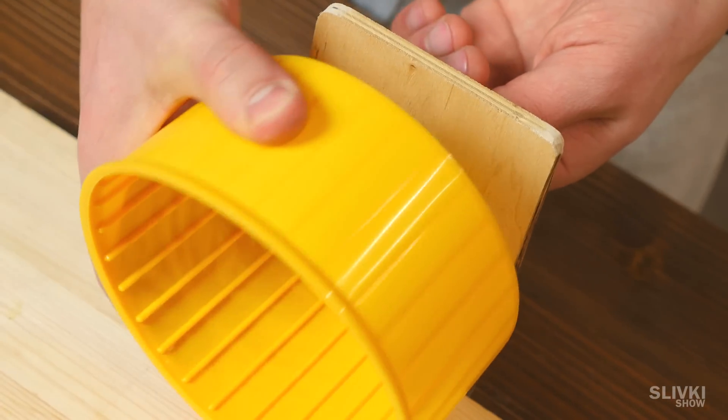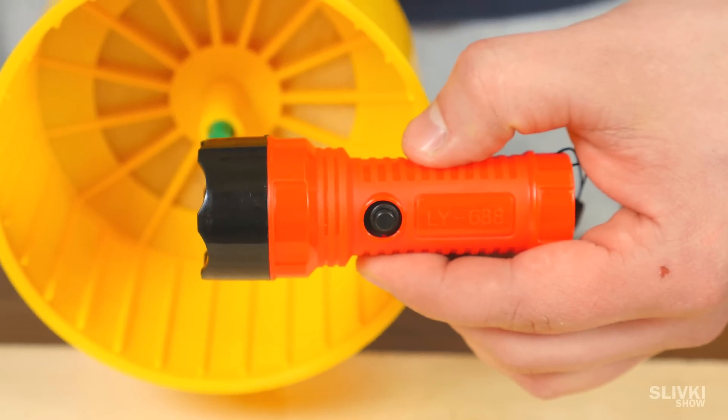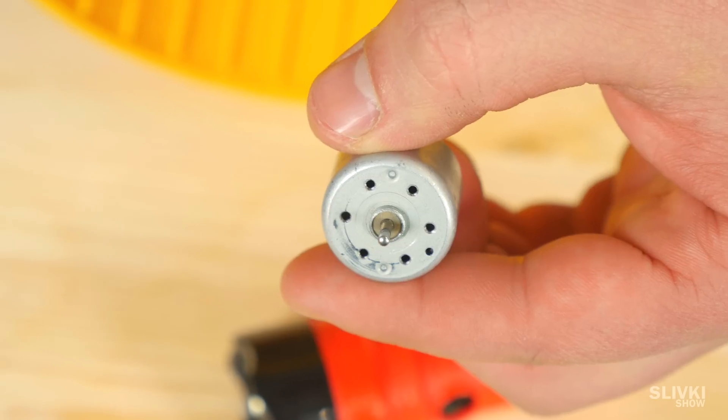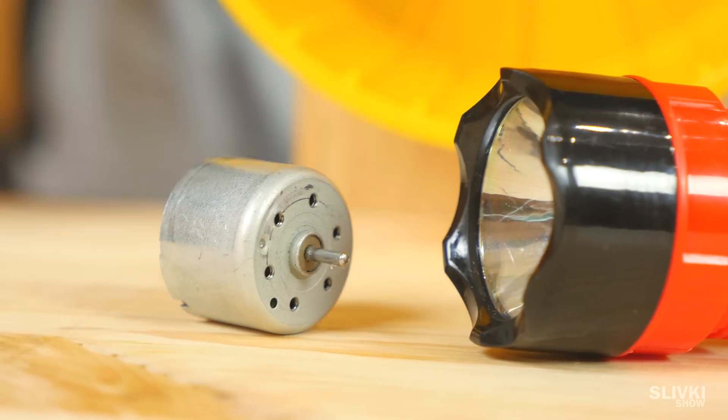Now put a wheel on its place and check how it's spinning. Then we need a cheap flashlight which works on one battery, and it's important. Also, we need to find a little motor about this size. You can get it from an old toy.